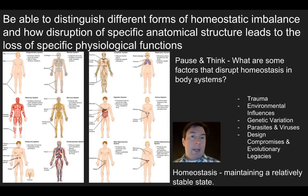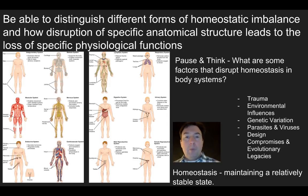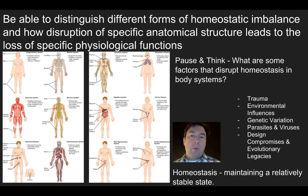Here's a list of possible things that could disrupt homeostasis. One is trauma. If you're in a car crash and break your leg, the leg — which relies on skeletal and muscle function working together to allow movement and provide support — will now be impaired. With a broken bone, your movement is disrupted and you lose that homeostatic ability to move muscles and function properly.